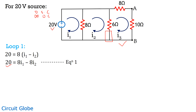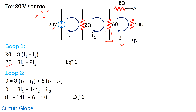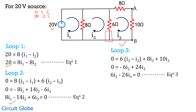For loop 2, we get: 8·I1 − 14·I2 + 6·I3 = 0. For loop 3, which has three resistances of 6 ohms, 8 ohms, and 10 ohms, applying KVL gives: 6·I2 − 24·I3 = 0. Solving all three equations, we get I3 = 1.11 amperes.